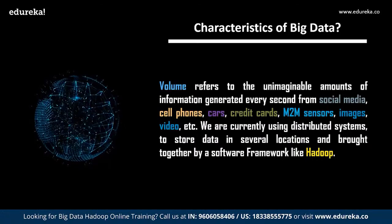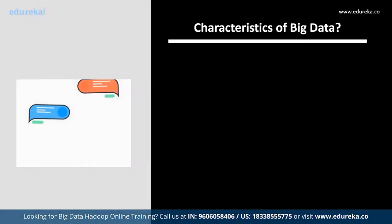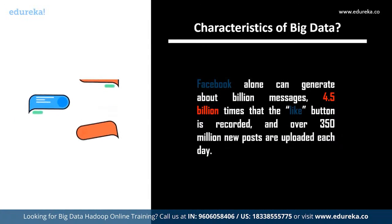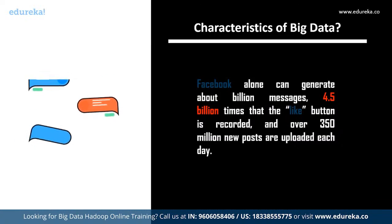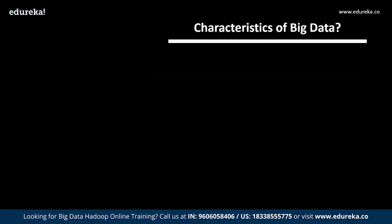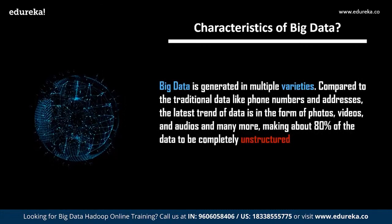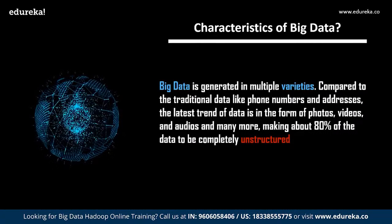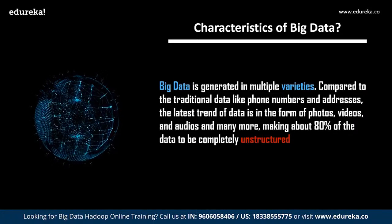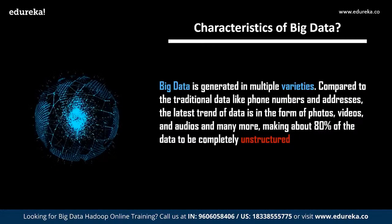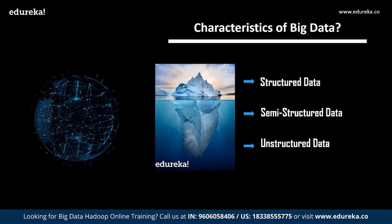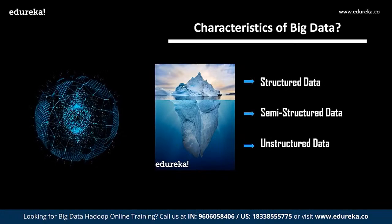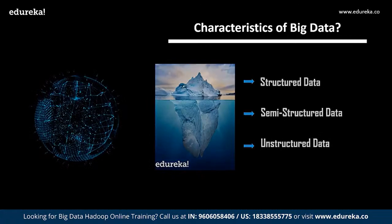We are currently using distributed systems to store data in several locations and bring them together by software frameworks like Hadoop. Facebook alone generates billions of messages, the like button is recorded 4.5 billion times, and over 350 million new posts are updated each day. Such huge amounts of data can only be handled by big data technologies. Followed by volume, we have variety — big data is generated in multiple varieties. About 80% of the data is completely unstructured, making structured data just the tip of the iceberg.